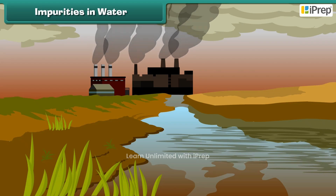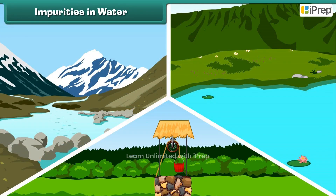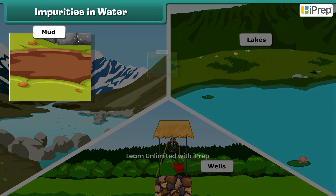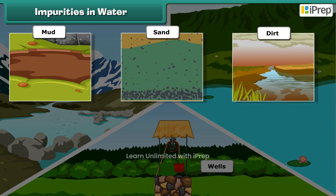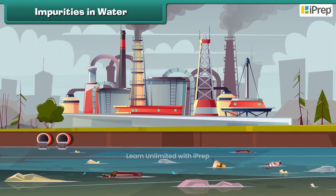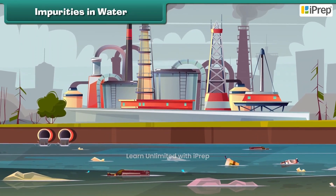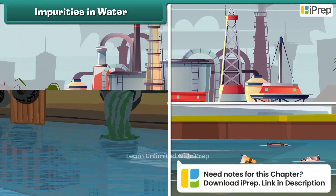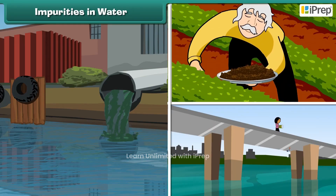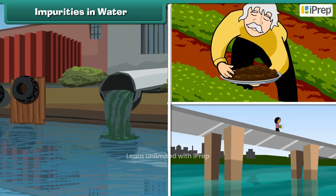The fresh water present in rivers, lakes, wells, and other sources has many impurities in it, like mud, sand, dirt, minerals, and some germs. Many harmful substances also mix with water in the form of industrial, agricultural, and domestic wastes. This makes water unfit for use.